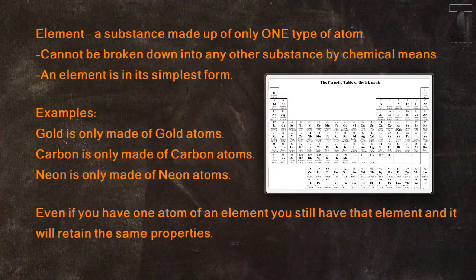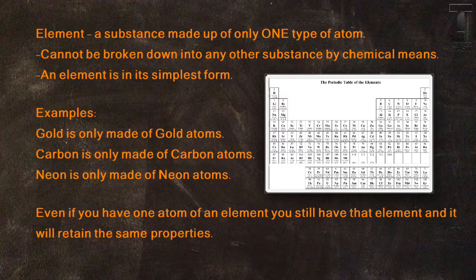An element is a substance consisting of only one type of atom. An element cannot be broken down into any other substance by chemical means, and it is in its simplest form.